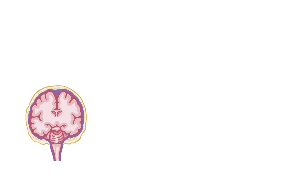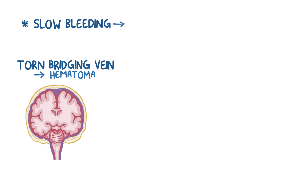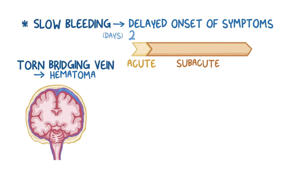Regardless of the mechanism, once a bridging vein is torn, the blood pools in the subdural space and creates a hematoma. Since the damaged bridging veins are under low pressure, the bleeding can be slow, which causes delayed onset of symptoms that might develop over the course of days to weeks as the hematoma gradually expands. An acute subdural hematoma causes symptoms within 2 days, a subacute subdural hematoma causes symptoms between 3 and 14 days, and a chronic subdural hematoma causes symptoms after 15 days.